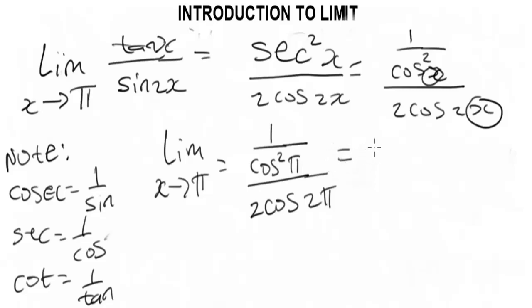Okay, so when you simplify this more, let me use my calculator. We're going to have 1 over cos squared π, which will give you minus 1. Okay, that's minus 1 squared. Over 2 times cos 2π, which will give you 1.